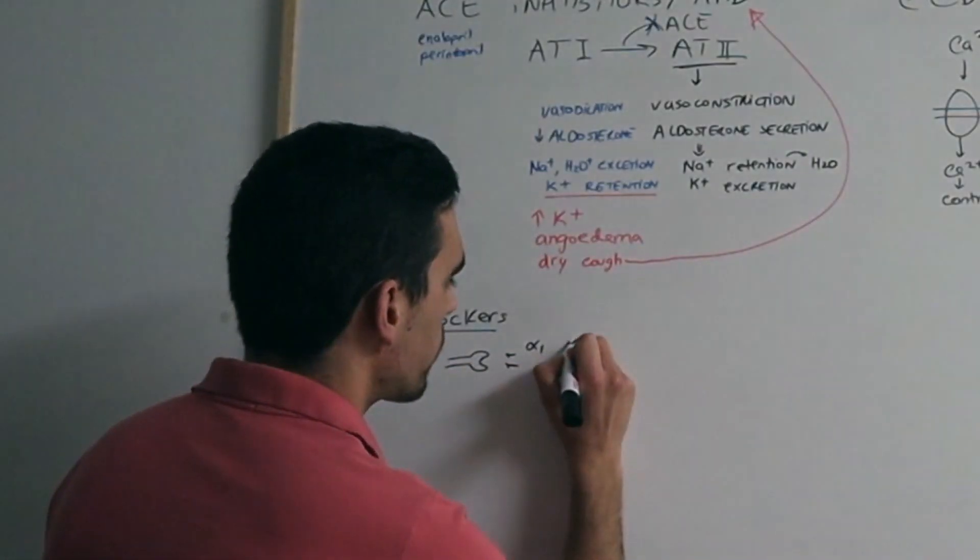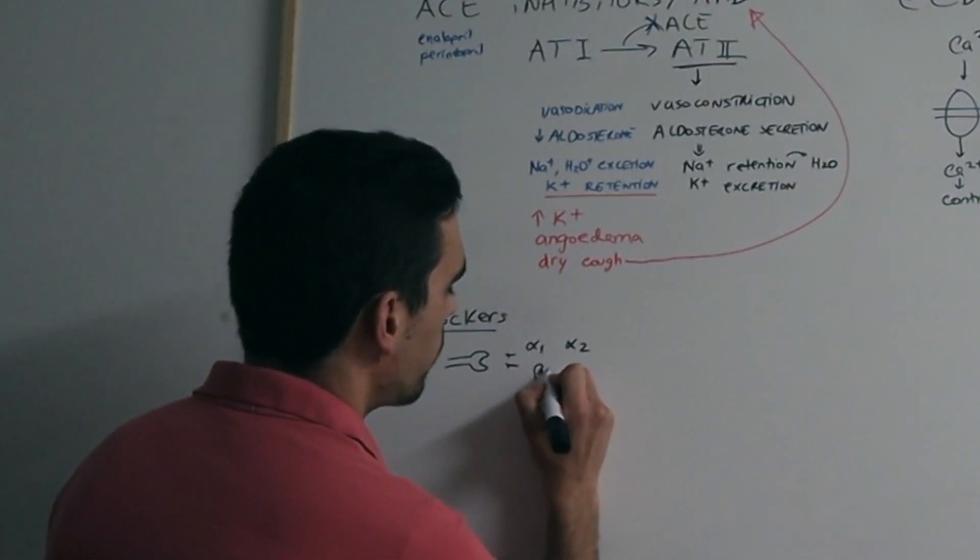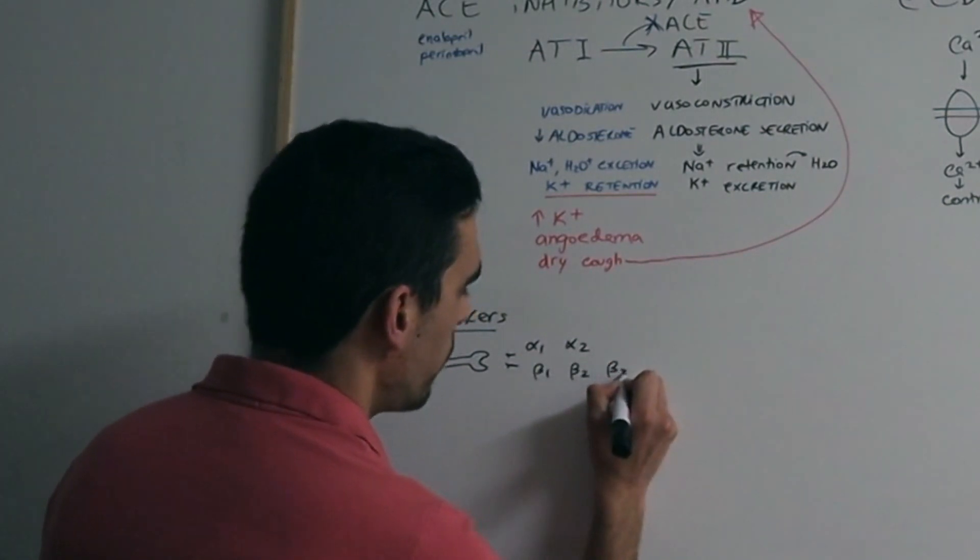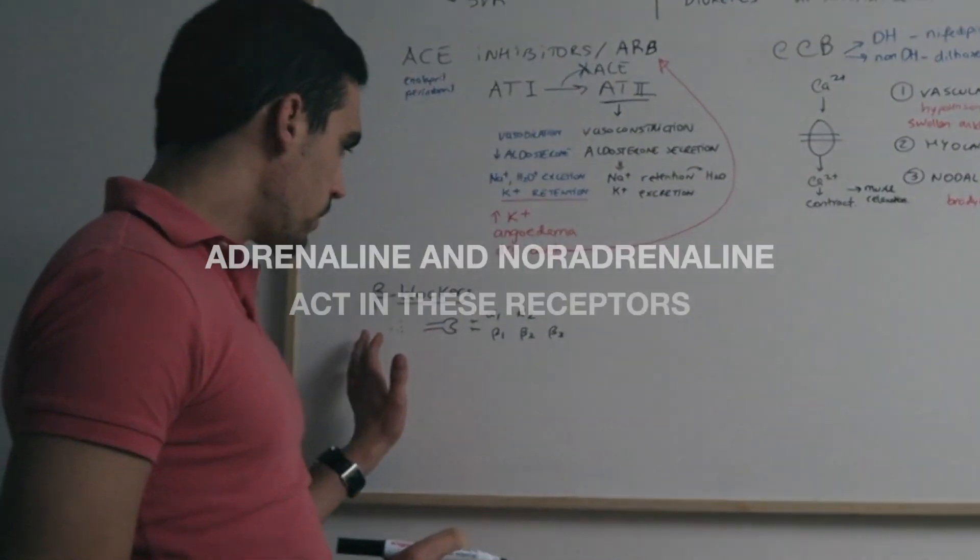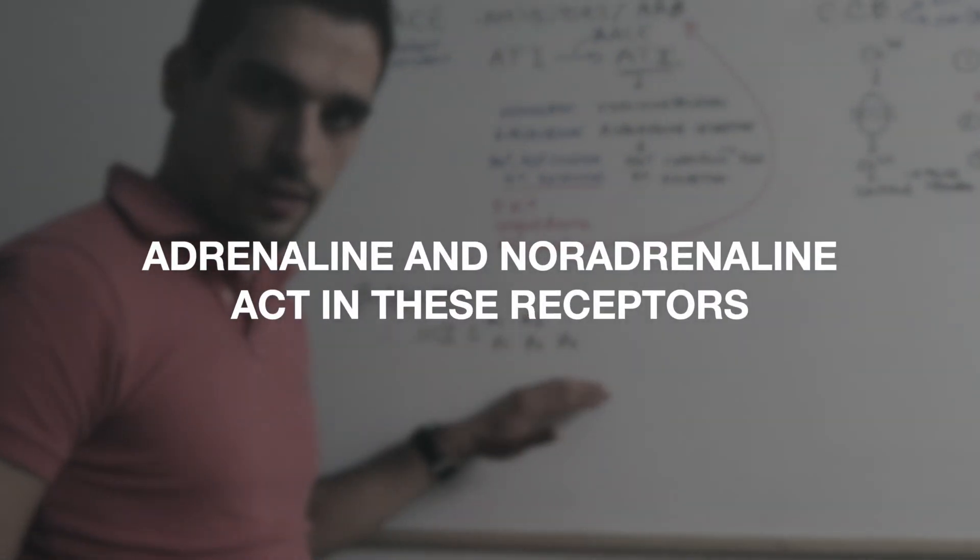There are alpha-1 adrenoreceptors and alpha-2, and then the beta-receptors: beta-1, beta-2, and beta-3. These neurotransmitters can act on these receptors.